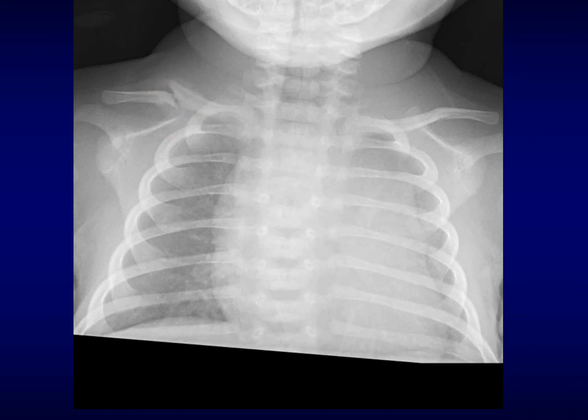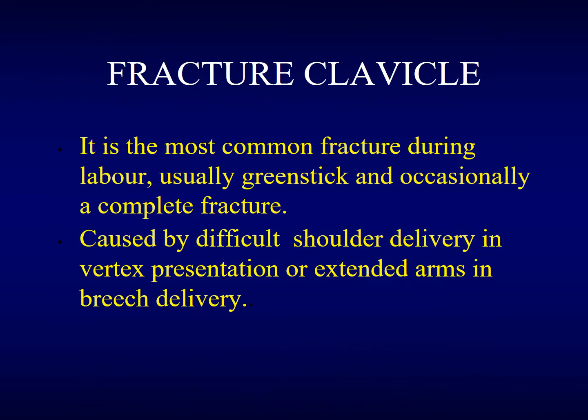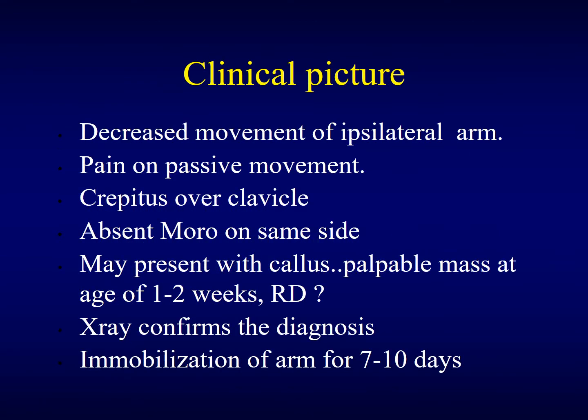On the x-ray, we have a fractured clavicle. It is the most common fracture during labor. It is usually a greenstick and occasionally a complete fracture. It is caused by a difficult shoulder delivery in vertex presentation or extended arms in breech. The clinical picture is that the patient cannot move this arm. There is pain on passive movements. You cannot elicit the Moro reflex on that side, making it one of the causes of an asymmetric Moro reflex. We find crepitus over the clavicle. It may present with a callus if it heals and forms a palpable mass noted at the age of one to two weeks.